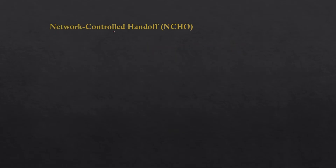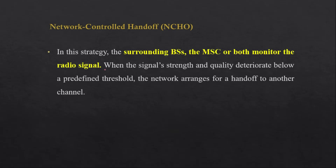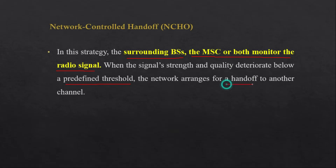In Network Control Handoff (NCHO), the surrounding base stations, the MSC, or both monitor the radio signal. When signal strength and quality deteriorate below the predefined threshold, the network arranges for a handoff to another channel. The decision is taken by the network — either by the base station, BSC, or MSC — so the mobile does nothing; everything is done by the network.